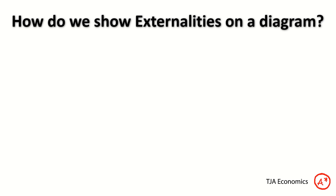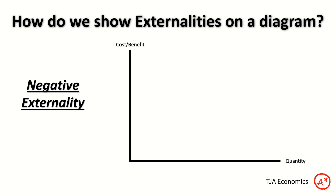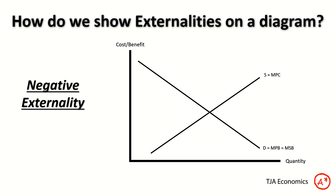We can show this on a negative externality diagram. We have cost-benefit on the vertical axis and quantity on the horizontal axis. We have our demand curve — marginal private benefit equals marginal social benefit. We have our supply curve, which equals the marginal private cost, because producers only care about their private costs. But there is also a separate supply curve that accounts for all the external costs — the vertical distance between those two curves is the external cost. When we account for it, the supply curve shifts inward and is greater.